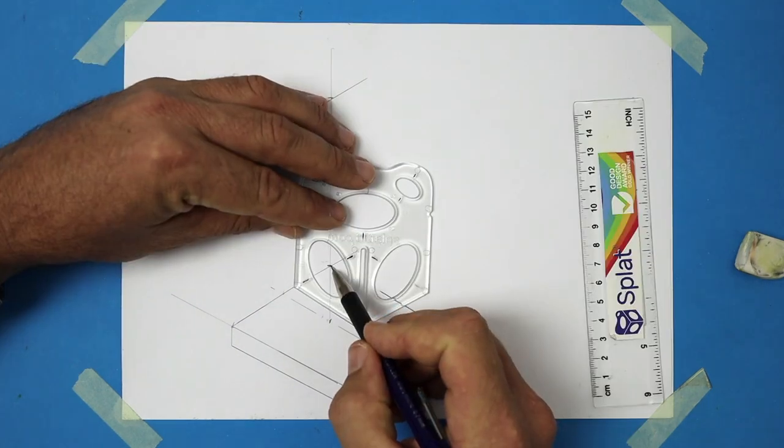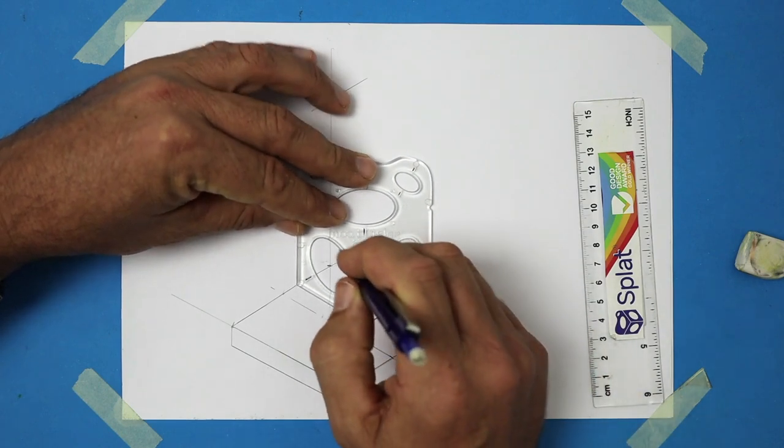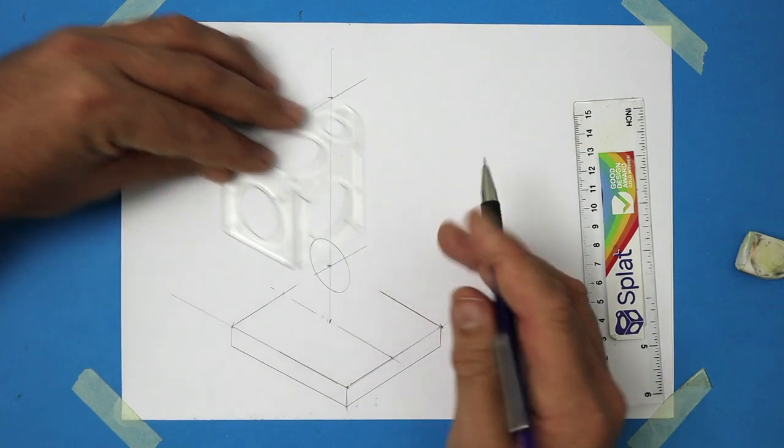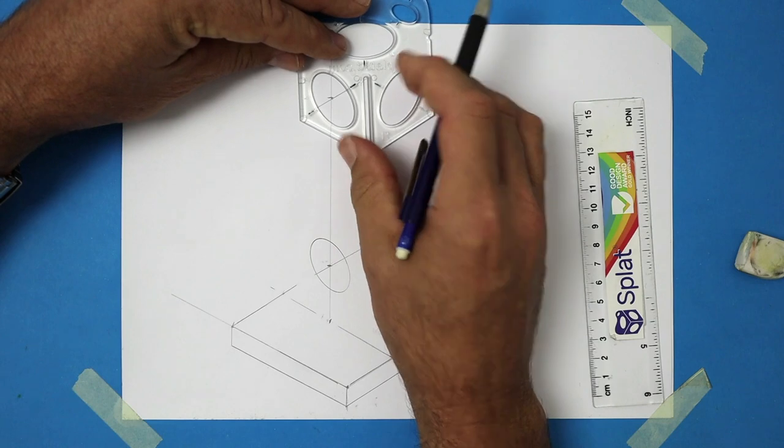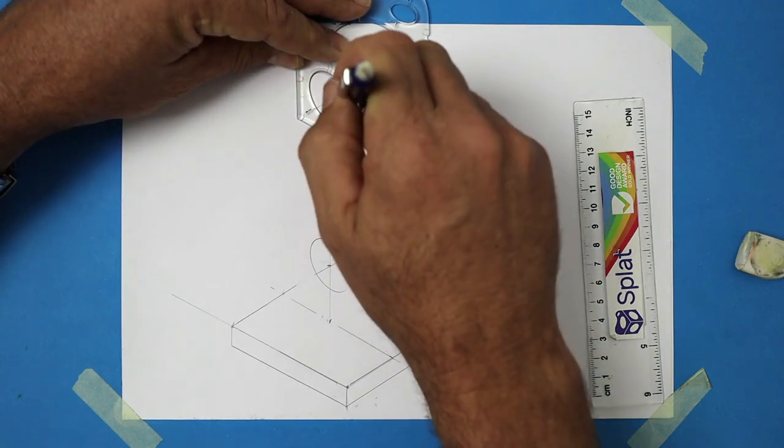Place the ellipse down over that point and make sure the point is right in the middle. Then draw the full ellipse. That's looking awesome. Let's do the same thing at the top. Make sure the point is in the middle of the ellipse and then draw in the full ellipse.